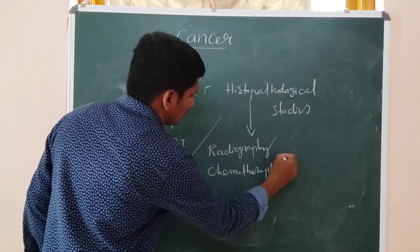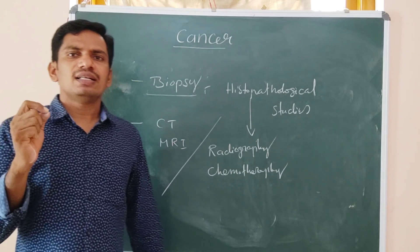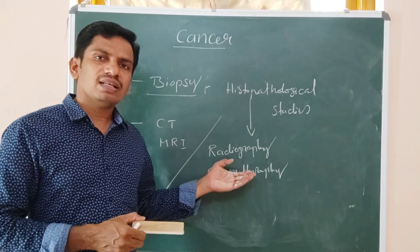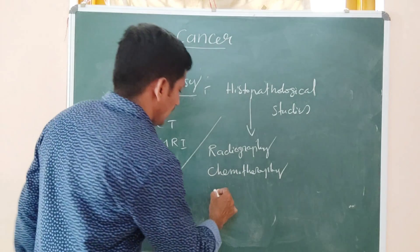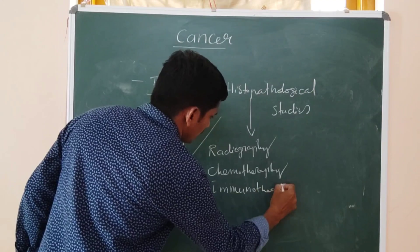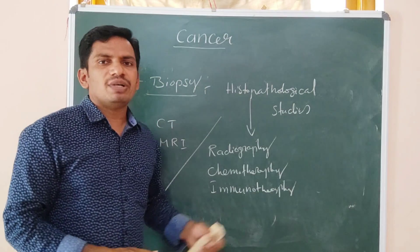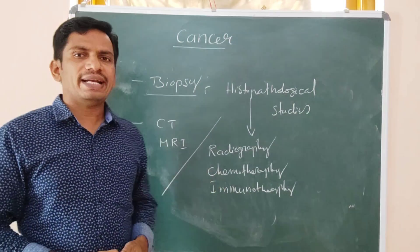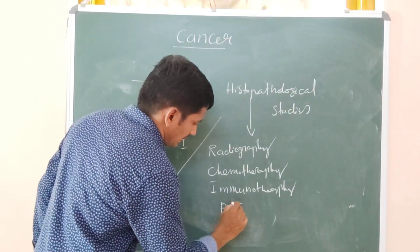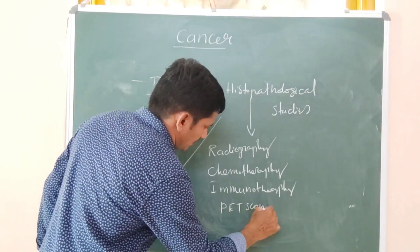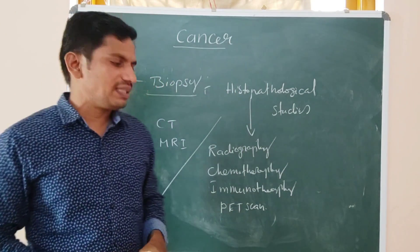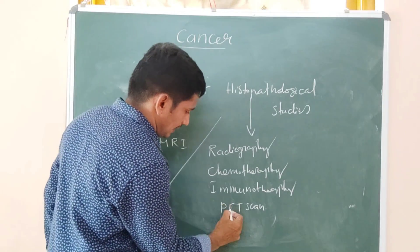By using chemicals, we can kill the cancer cells — this is known as chemotherapy. By immunizing with hormones, we can also control cancer — this is immunotherapy. PET scan is also used to know the whole body's metabolic activities.